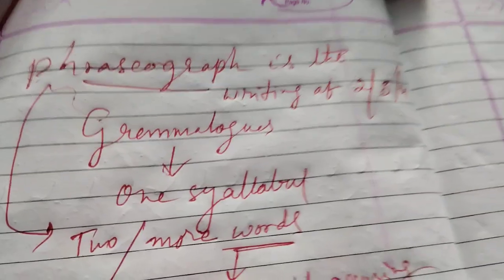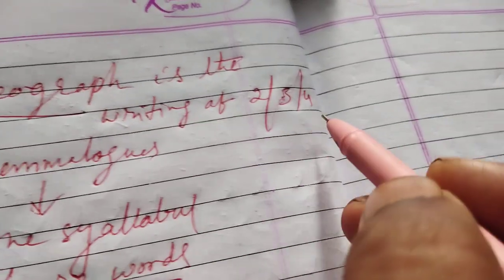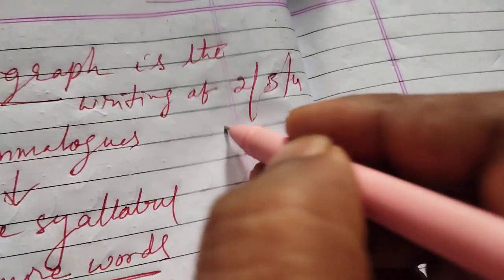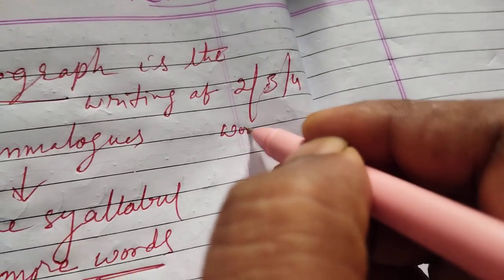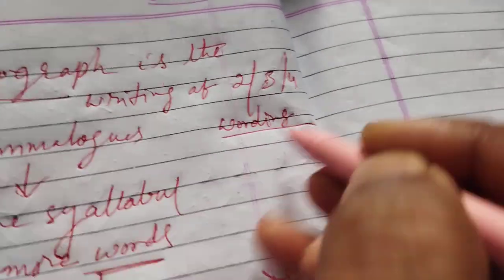Phasography is the writing of two or four words joining. For example...